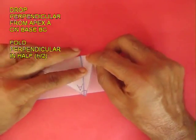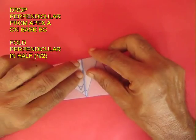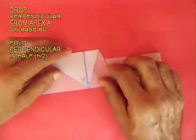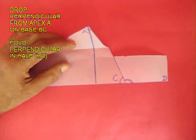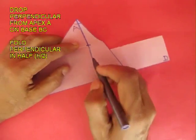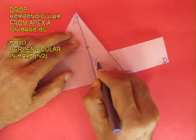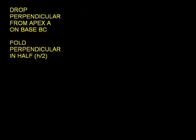Then fold this perpendicular in half so that point A sits on the base BC. Now the perpendicular is divided into two equal parts and the half part is h by 2.